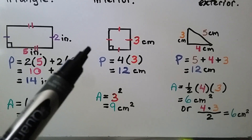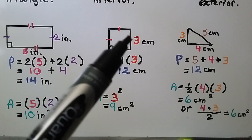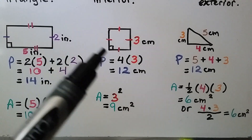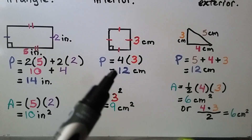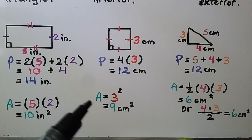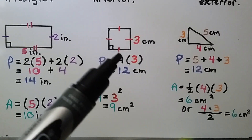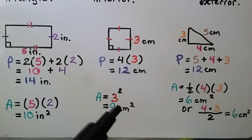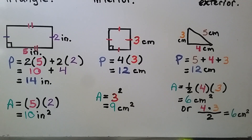A square has 4 congruent sides. If this is 3 centimeters, they're all 3 centimeters. We find the perimeter by doing 4 times 3 centimeters — that's 12 centimeters. The area is side times side, or side squared: 3 times 3 equals 9 centimeters squared.